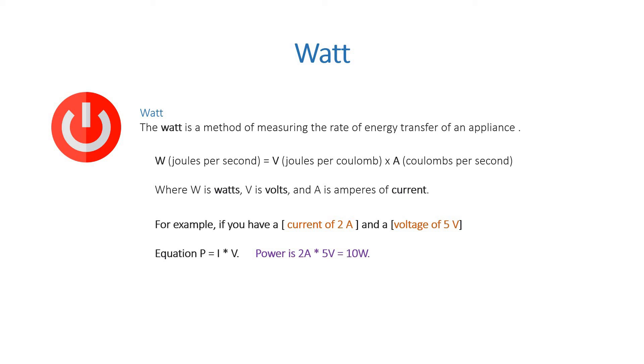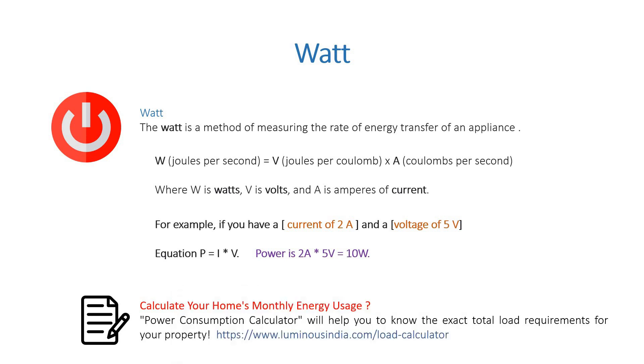For example, if you have a current of 2 amps and voltage of 5 volts, then the power is equal to 2 times 5 is equal to 10 watts. And you can also calculate your home monthly energy usage by using this website. Please subscribe, like, comment and share. Thanks for watching.